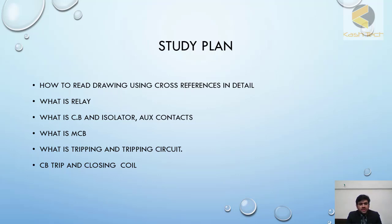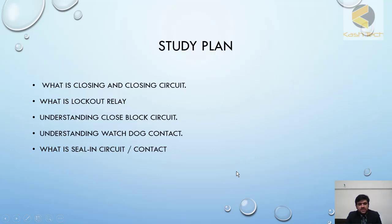After that, I have explained the tripping circuit — what tripping means, how tripping is different from opening a circuit, and what a tripping circuit actually is. Then I have explained CB trip and CB closing, and what the closing circuit is.